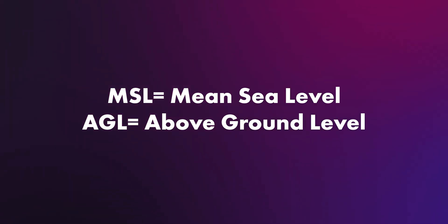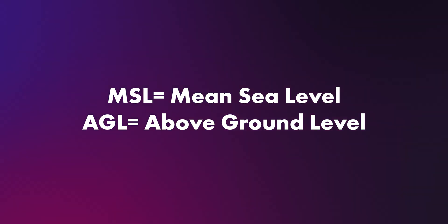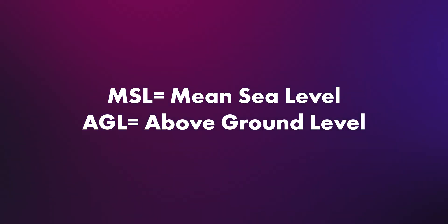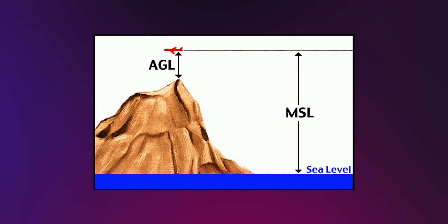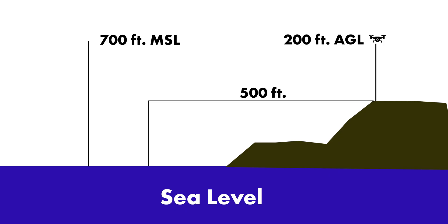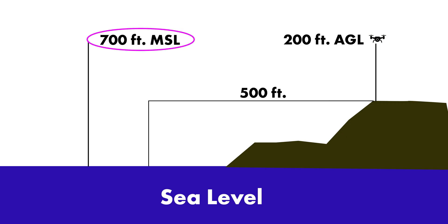There are two main types. MSL stands for mean sea level — this is altitude measured from sea level, a fixed reference point, and it's what sectional charts mostly use. AGL is above ground level — altitude measured from the ground directly beneath you. For example, if the ground where you're standing is already 500 feet above sea level and your drone is flying 200 feet AGL, your drone's actual altitude is 700 feet MSL.